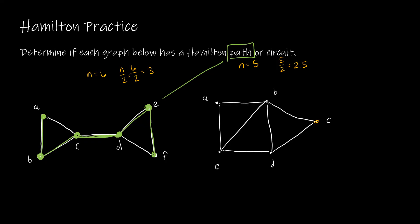For our second example, Dirac's theorem wasn't very helpful, but let's try on our own. Starting at A, I can travel to B, then to C, then to D, then to E, and back to A. So this one does, in fact, have a Hamilton circuit. There's no theorem that will tell us for sure whether there is or is not a circuit or path for each of these examples.